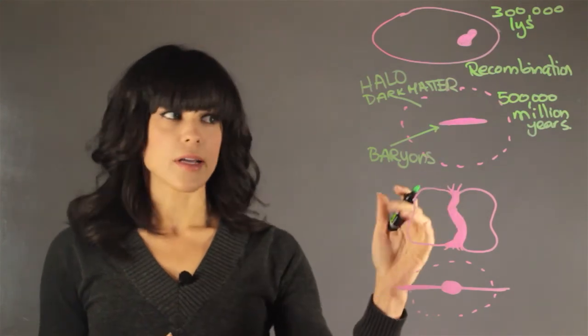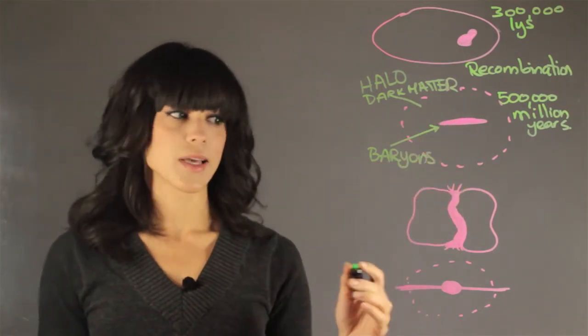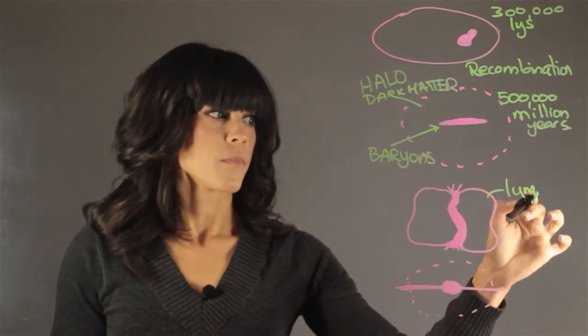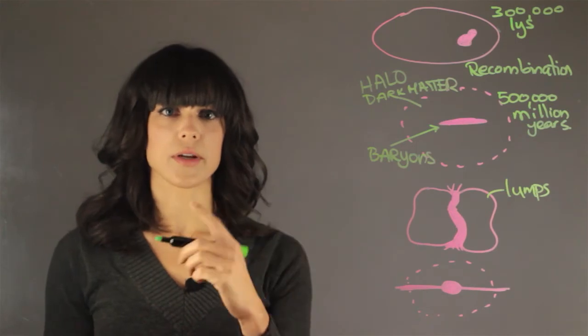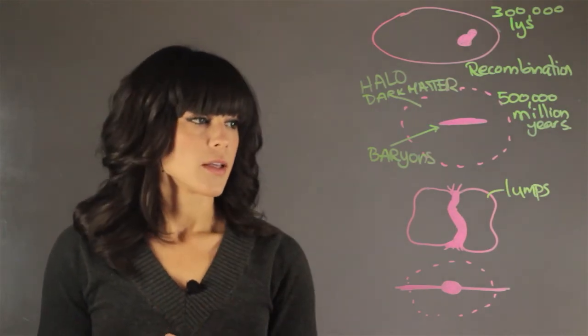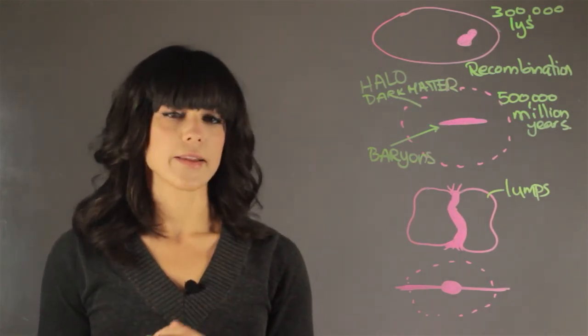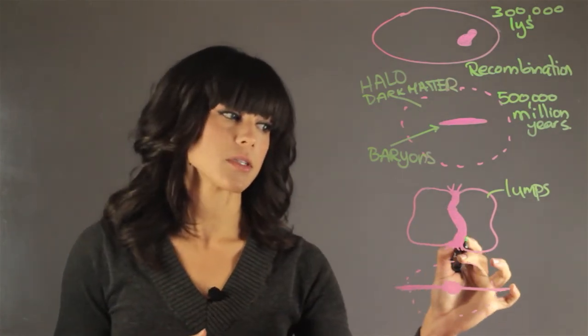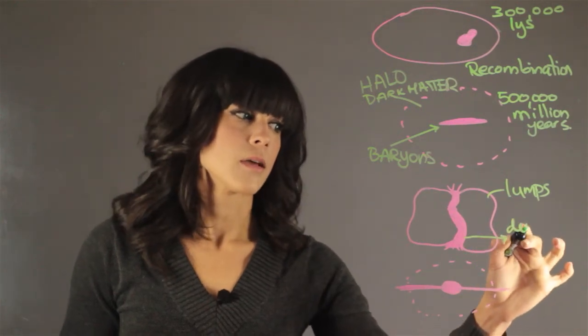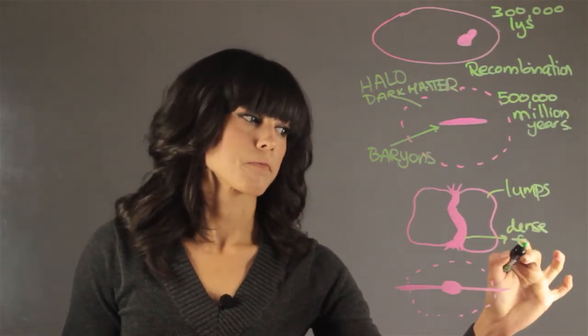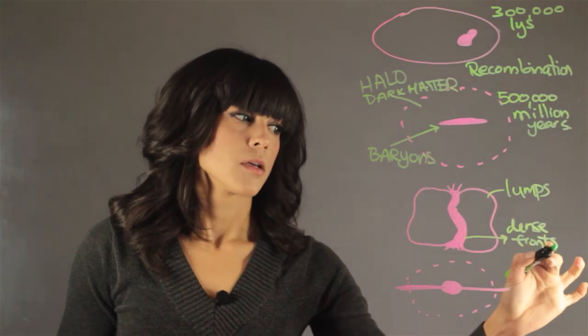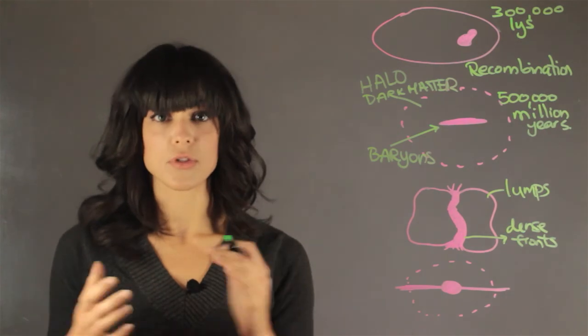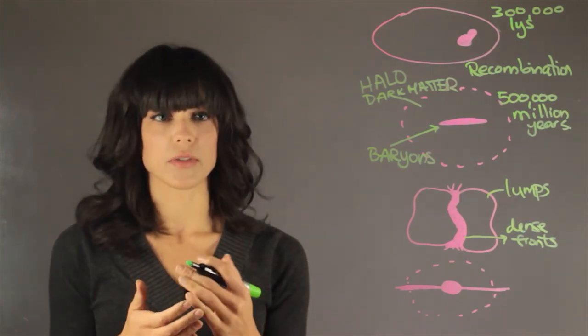And then what happened later is that within the core, we get these lumps of baryonic matter. So we have these lumps that are rotating in the core, so they have their own orbits around the center of the core, and they start colliding against each other. And what happens here is during the collisions, they find these really dense fronts. And what happens is that from this front, from the shock wave, you start forming stars.